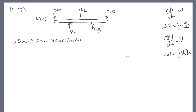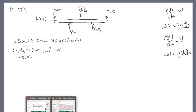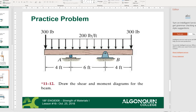Solving for reactions, let's start by taking the moment about A. Sigma M_A equals zero. We'll say positive counterclockwise. So we've got 300 times 4 feet — that's the distance from A. Then we have a resultant from the distributed load: 200 foot-pounds times 14 feet (that's 4 plus 6 plus 4) equals 2,800 pounds total.